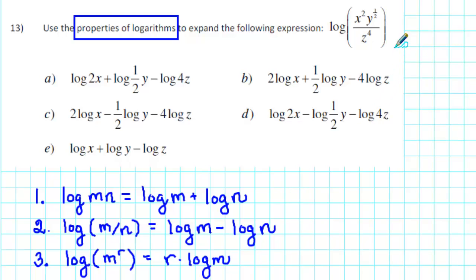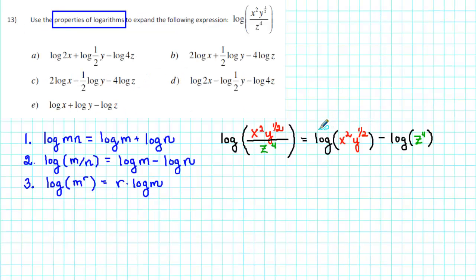To expand the given expression, we first determine whether the argument of the logarithm is a product, quotient, or power. We notice that we have a numerator divided by a denominator, so we have a logarithm of a quotient and need to apply property number two. We get the logarithm of x squared y to the one-half, minus the logarithm of z to the fourth.